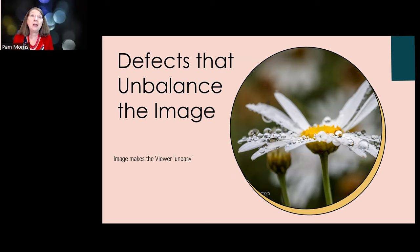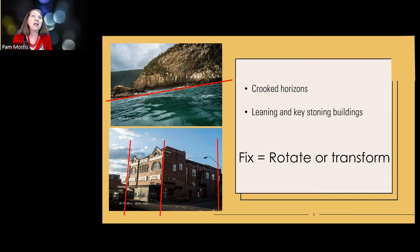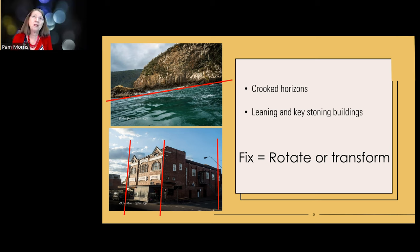First we'll look at things that unbalance an image. The most obvious is crooked horizons and crooked buildings. You can see it's a lovely picture of a cliff and water, but that crooked horizon really unbalances the viewer - it makes them feel uneasy. Putting things on diagonals can provide energy in an image, but in this seascape it's obviously an accident, so it needs to be fixed.